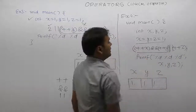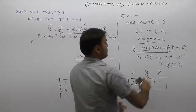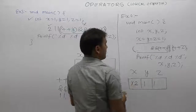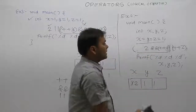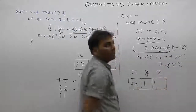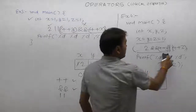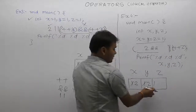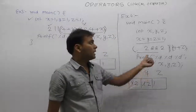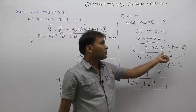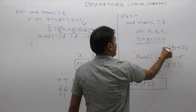Now internally solving for AND: for the first operand, plus-plus x — सबसे पहले x में increment होगा, then replacement. Replaced current value of x becomes 2. 2 means condition is true. In case of AND, if first condition is true, then second condition is also checked. According to second condition: pre-increment in y — increment in y, then replacement. Replaced value of y, current value becomes 2. For AND: first condition is 2, second is also 2 — non-zero means true in C. First is true, second is also true, therefore overall result of this AND expression is also true — true means 1.